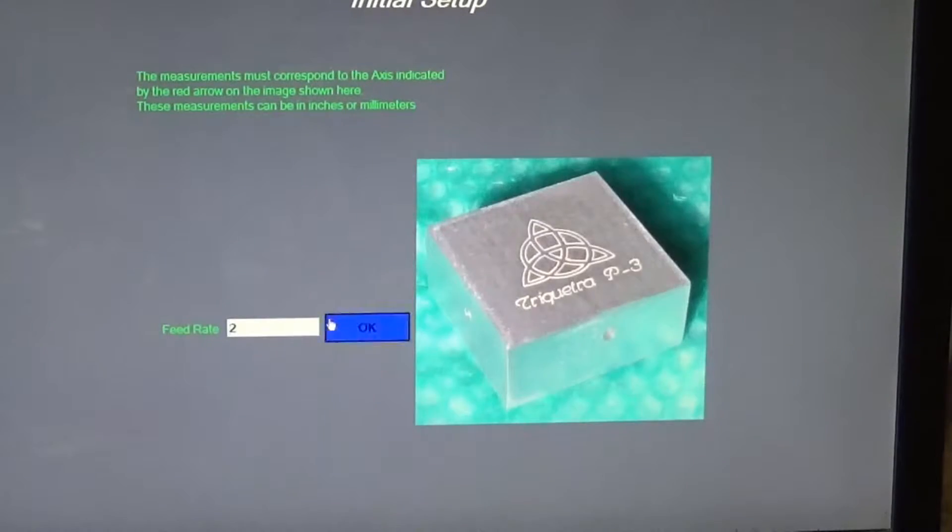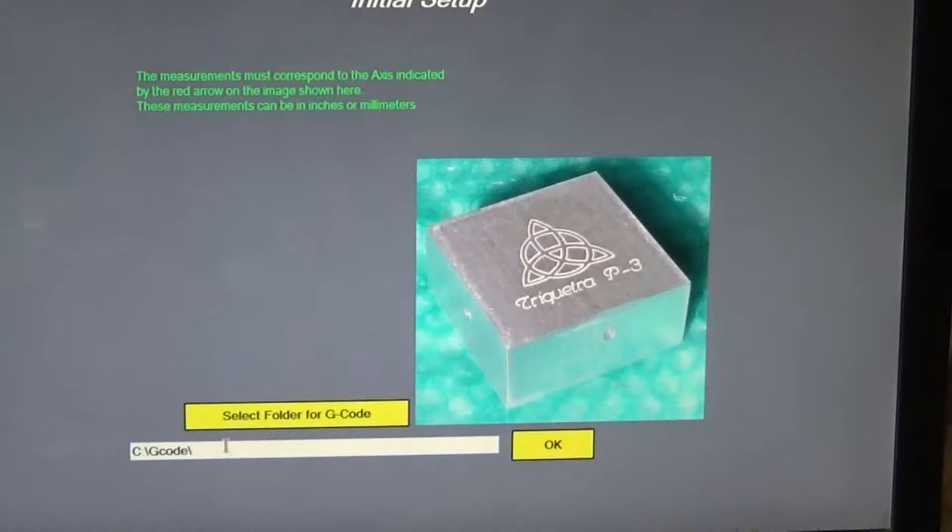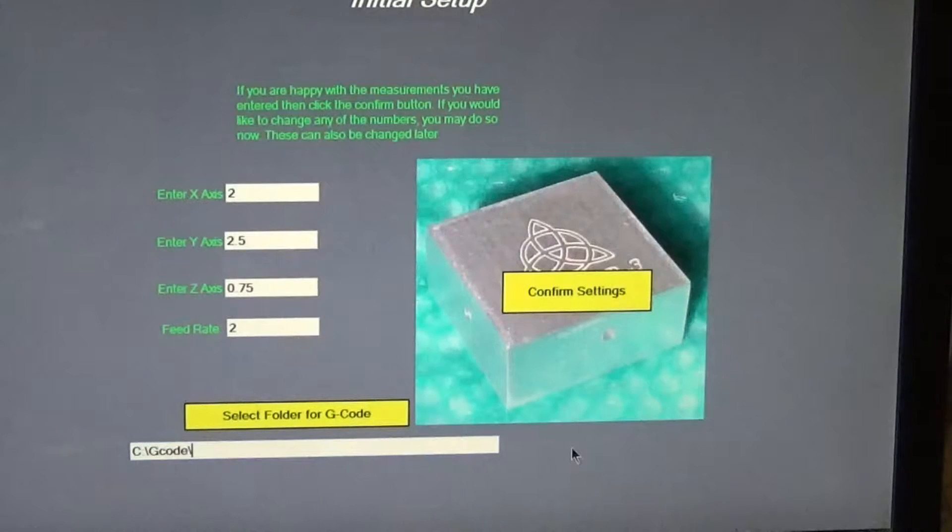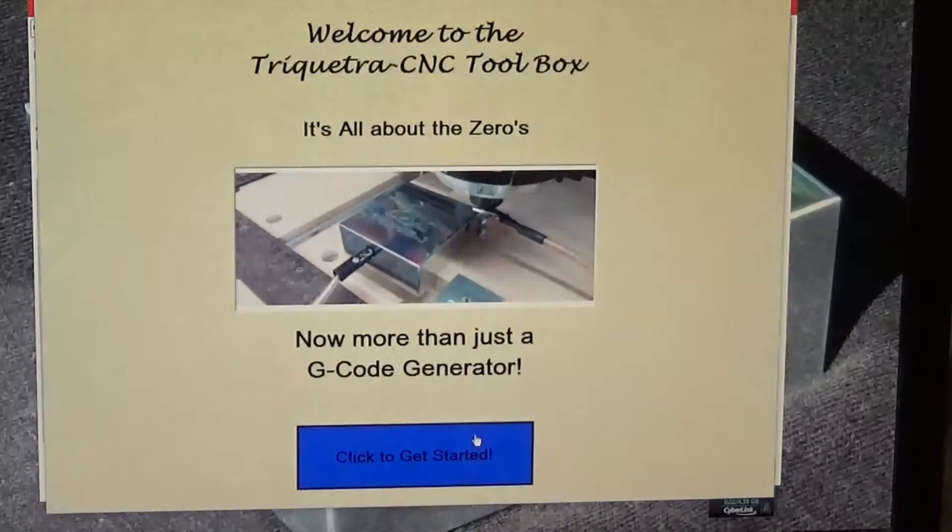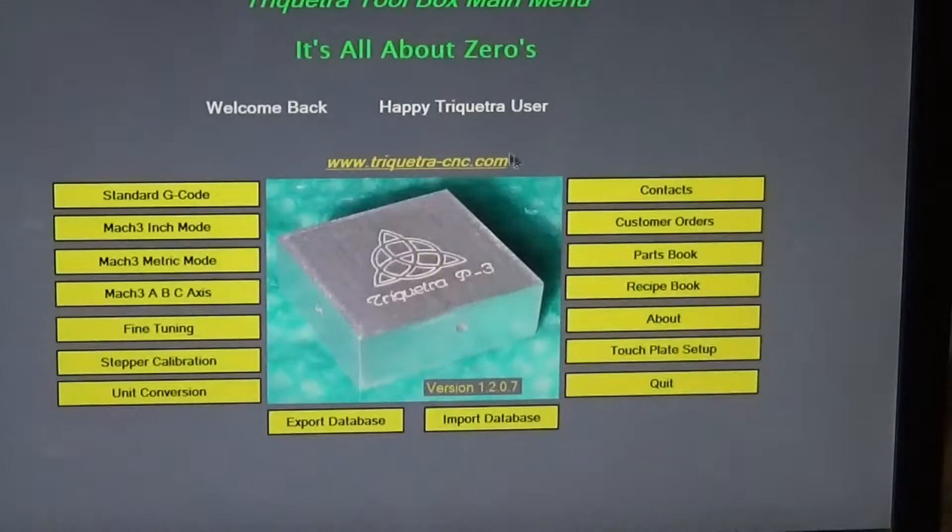My feed rate is set to two, I'm going to accept that. My default location to save our g-code files to is going to be the C drive in a folder called g-code. Okay, now here we get to look at all the numbers one more time to make sure we like them, and that looks good enough for me. So we'll confirm the settings and click get started, and here we are at the main menu.